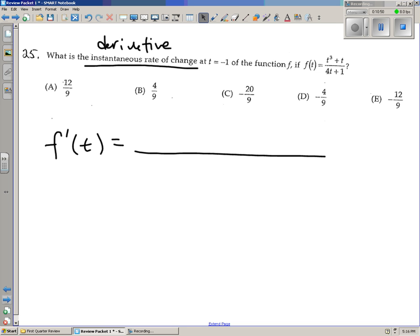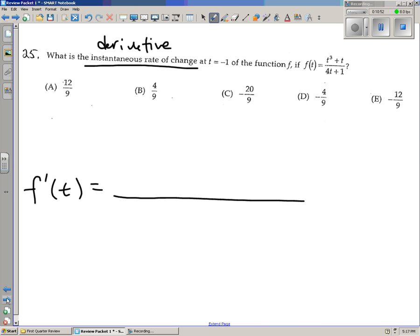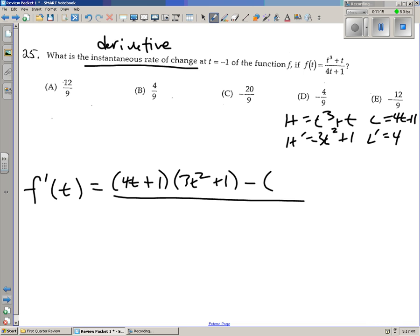f prime of t is, and we're going to use the quotient rule here. Let me just lower this. So we can use the quotient rule. High is t cubed plus t. High prime is 3t squared plus 1. Low is 4t plus 1. And low prime is 4. So we have low d high, 4t plus 1, times d high, which is 3t squared plus 1, minus high d low, t cubed plus t times a 4. I'm just going to throw the 4 in front. Over low squared, which is 4t plus 1 squared.